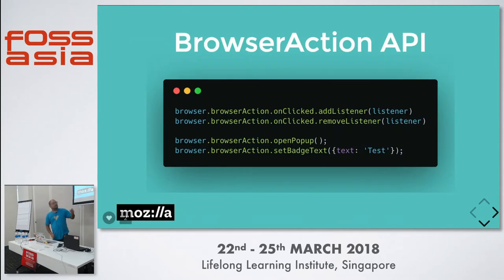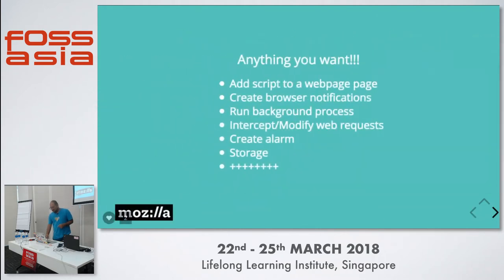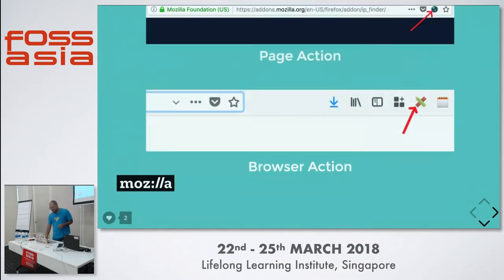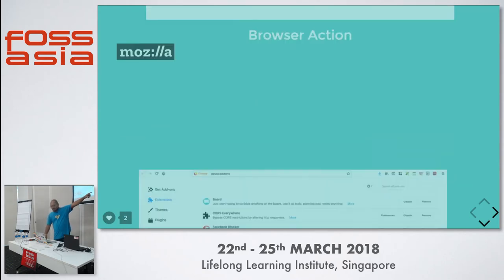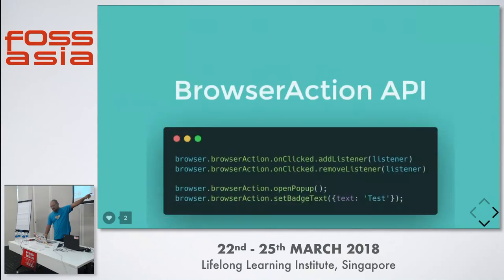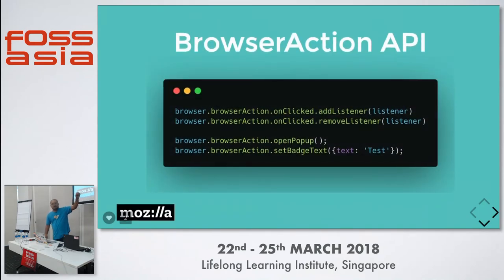Something interesting is the Browser Action API. That toolbar button is called browser action. To play with that button, all you need is this API. It can be clicked or opened. If you want to open a pop-up on click of that button, that's your API.